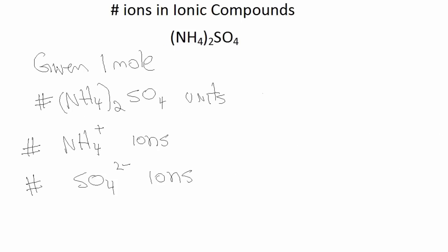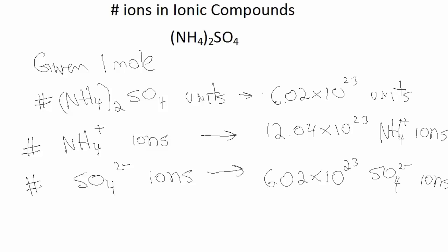Here's another problem with ammonium sulfate. Given one mole of this compound, determine the actual number of ammonium sulfate units, the number of ammonium ions, and the number of sulfate ions. For one mole, you'll get 6.02 times 10 to the 23rd units. You'll have twice as many ammonium ions because there are two ammoniums per unit — so 12.04 times 10 to the 23rd. And for sulfate, it's 6.02 times 10 to the 23rd sulfate ions.